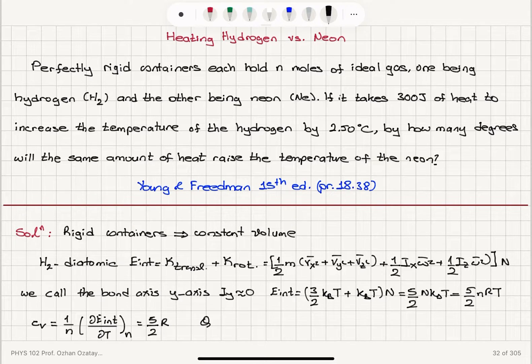So therefore, the heat added to the gas must be equal to number of moles, molar specific heat at constant volume, delta T, which gives us, if I have 300 joules of heat provided, 5/2 nR times delta T. Delta T in absolute scale and Celsius scale are the same, so it's 2.5.